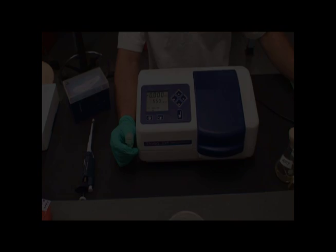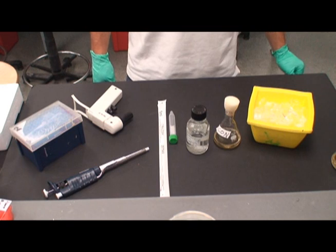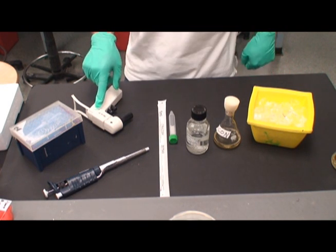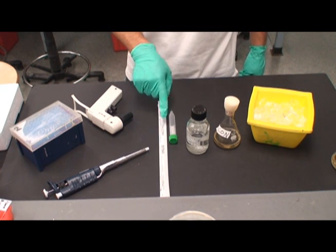We will now combine 0.5 milliliters from the control flask with 4.5 milliliters of phosphate buffered saline, a tenfold dilution, using the power pipetter.